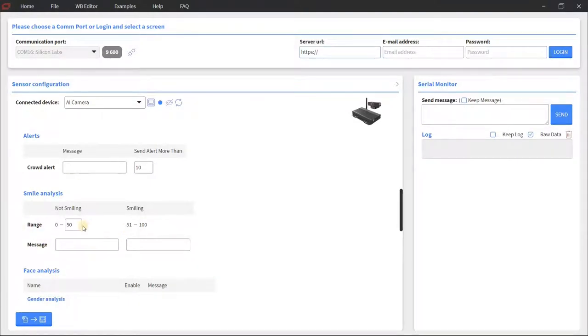Smile analysis means that we can send not smiling and smiling messages when 50% and here you can set the range, the 50% of the people are smiling or the other 50% is not smiling and you can set up this threshold.